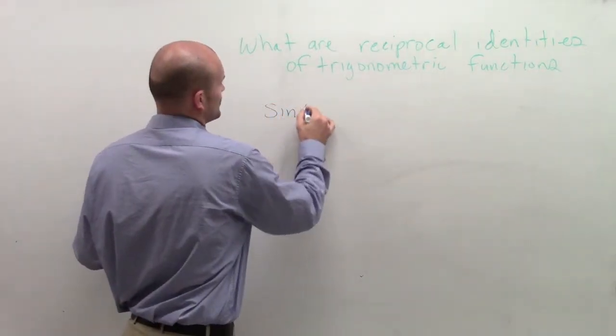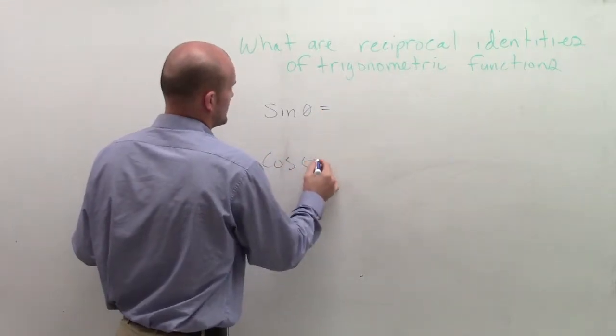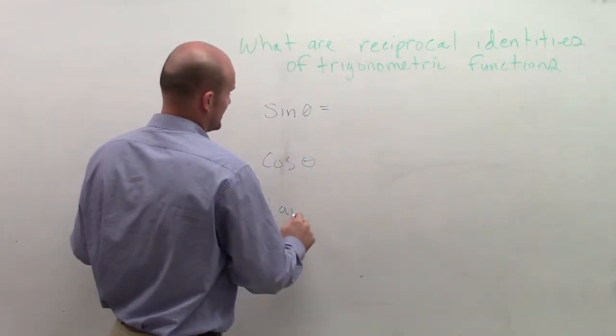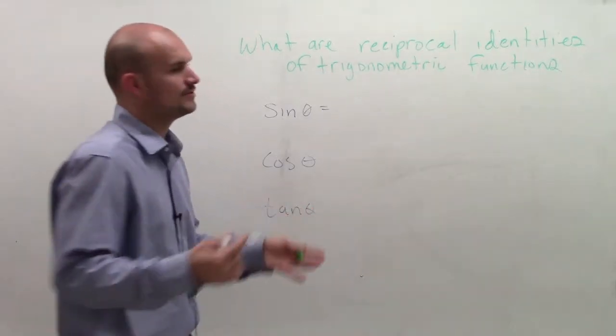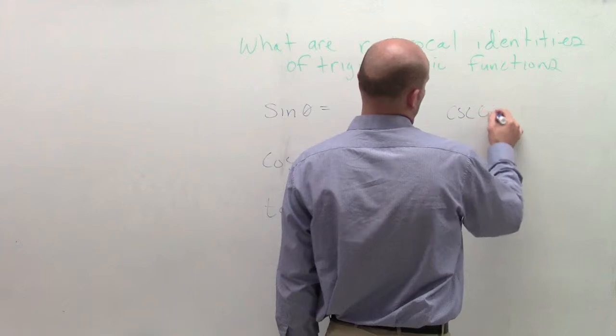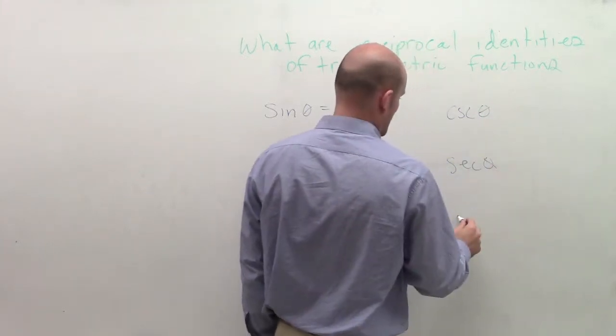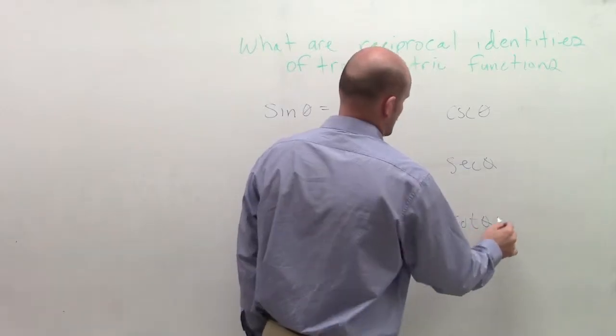So remember, we had our trigonometric functions to be sine of theta, cosine of theta, and then tangent of theta. And I'll get to the reciprocals. Actually, let's write the reciprocals down as well. We have cosecant of theta, secant of theta, and cotangent of theta.